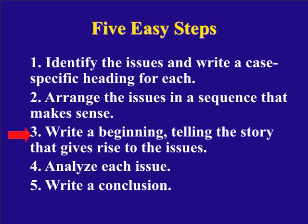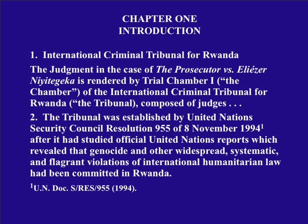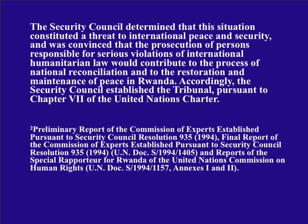The third step is to write a beginning. If you listened to the first lecture, you may recognize this beginning from a judgment by the International Criminal Tribunal for Rwanda. We determined that there's nothing particularly bad about this writing — it's just the wrong information in the wrong place. We don't want a history of the tribunal at the beginning of a judgment. What we want is an indication of who did what to whom before anyone set foot in court.